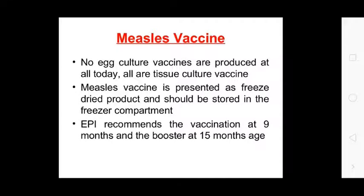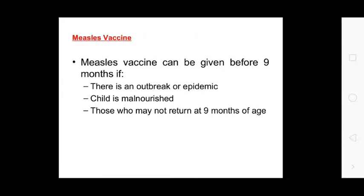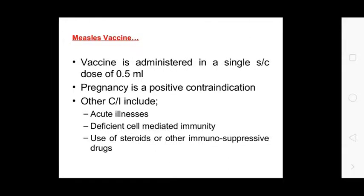Measles vaccines: no egg culture vaccines are produced today; all are tissue culture vaccines. The measles vaccine is presented as a freeze-dried product and should be stored in the freezer compartment. The EPI recommends vaccination at nine months with a booster dose at 15 months of age. In an outbreak or epidemic, the vaccine may be given to those who have not yet reached nine months of age. The vaccine is administered as a single subcutaneous dose of 0.5 ml. Contraindications include pregnancy, acute illness, deficient cell-mediated immunity, and use of steroids or other immunosuppressive drugs.